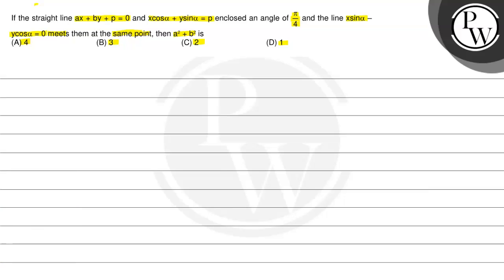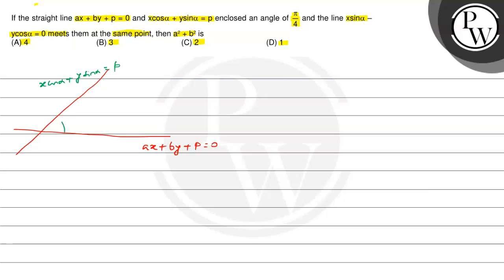One line is ax plus by plus p equals 0. A second line is x·cosα plus y·sinα equals p. We need to find the value of a² plus b².